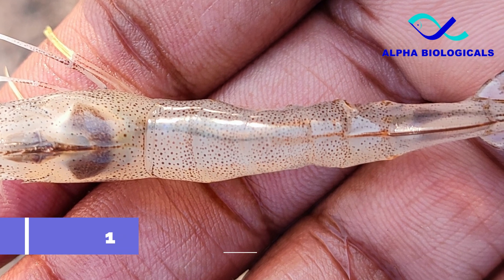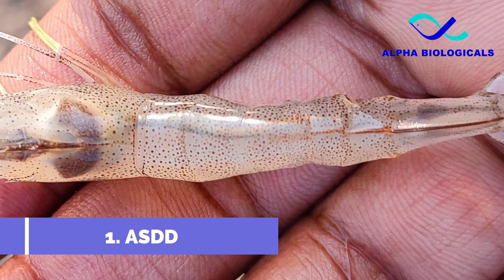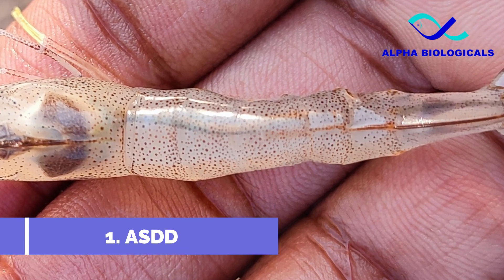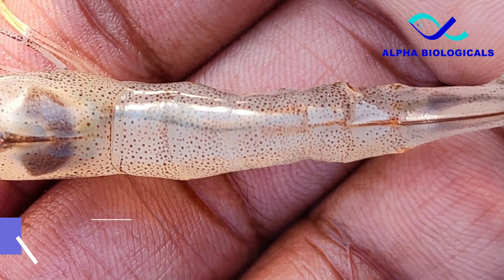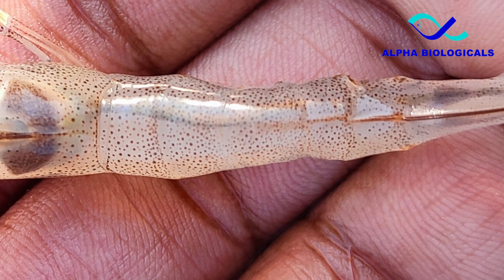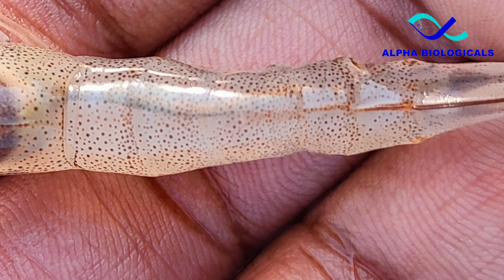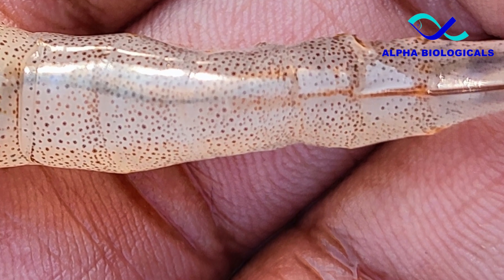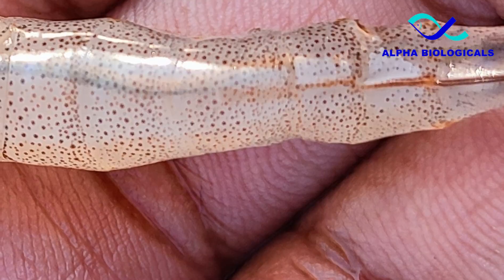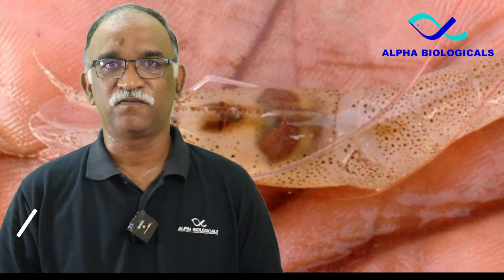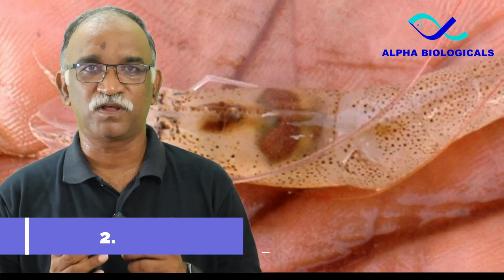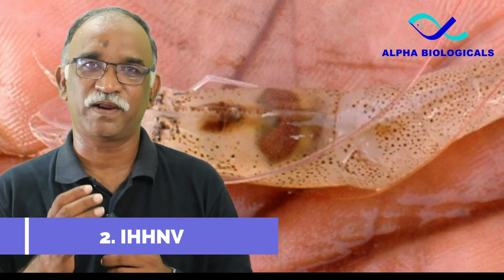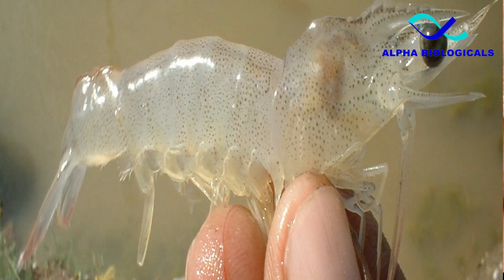The first reason is ASDD — Abdominal Segment Deformity Disease. This is a viral disease that has not been reported in India so far. The second reason is IHHNV — Infectious Hypodermal and Hematopoietic Necrotic Virus. This virus is present in India.